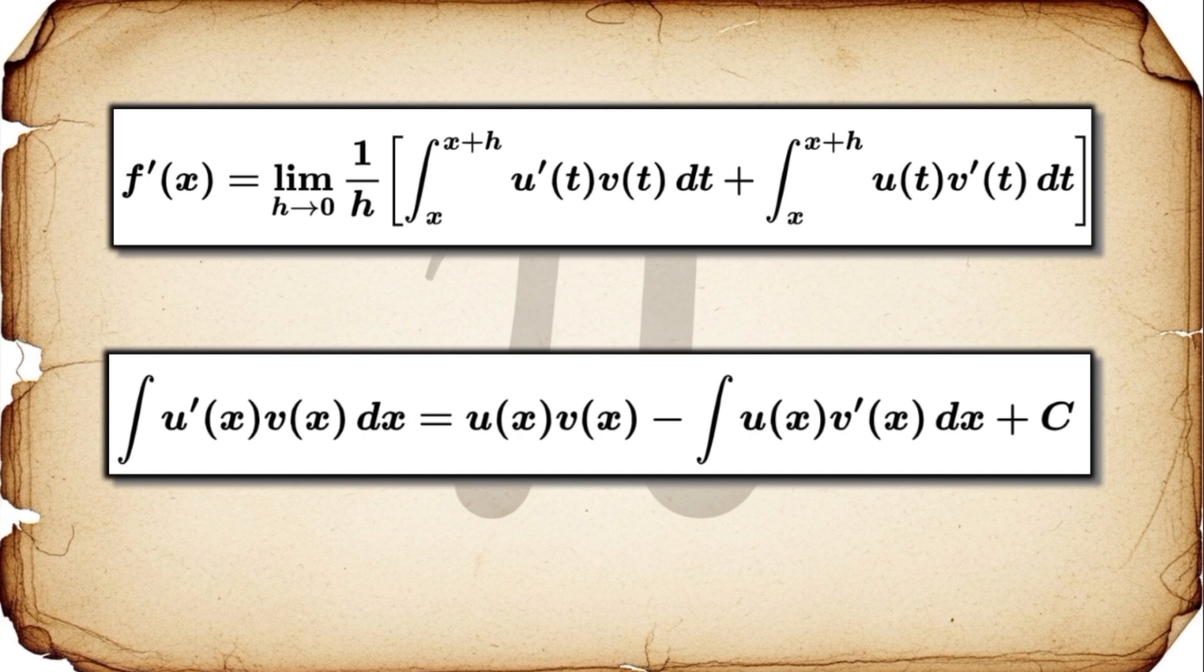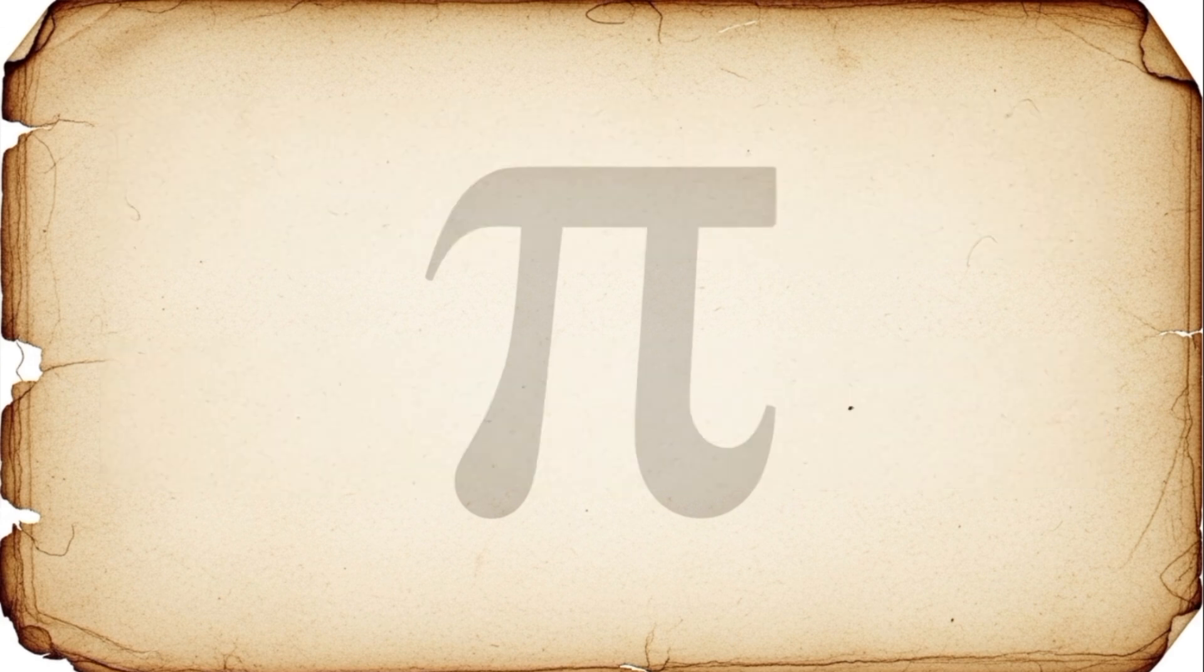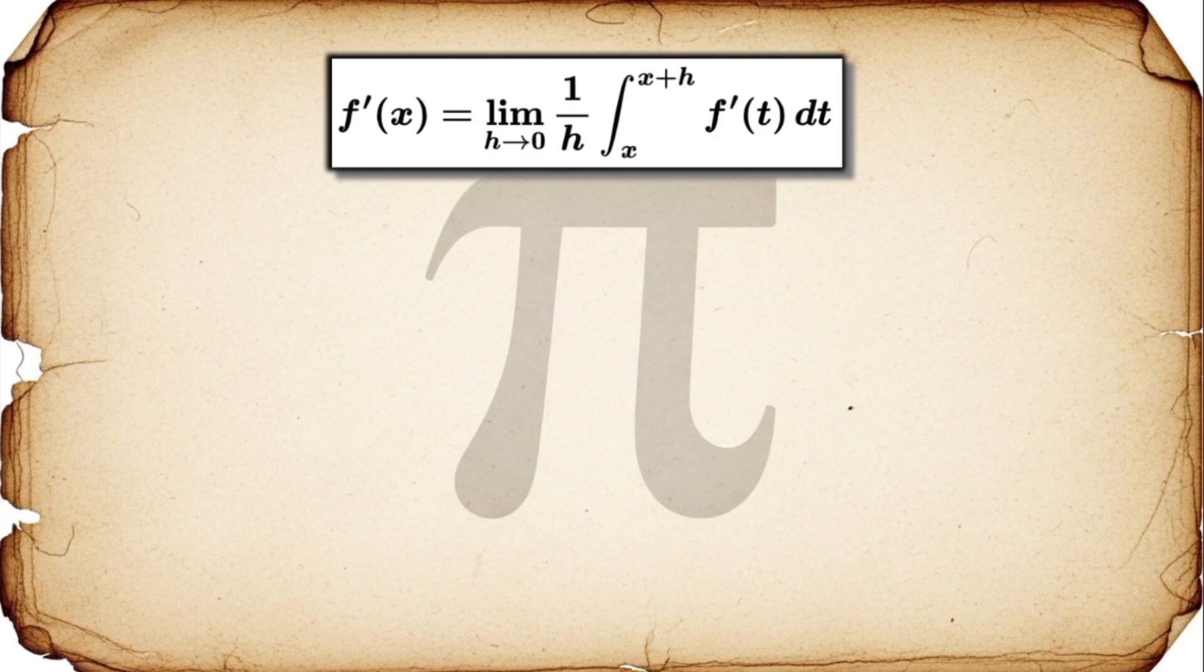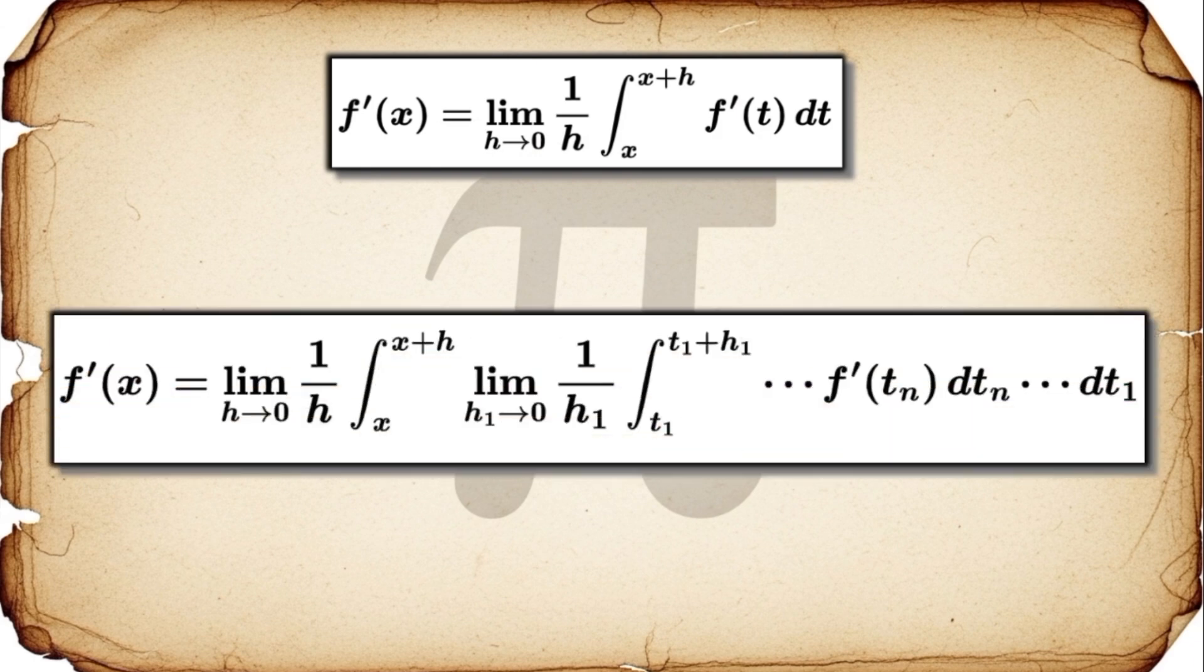But it gets even deeper. And honestly, it gets a little bit weird. Because our definition expresses f prime using an integral of f prime, what's to stop us from substituting the definition back into itself? And then doing it again, and again, and again? When you do this, you uncover this wild, infinite recursive structure that's hidden deep inside the concept of a derivative.